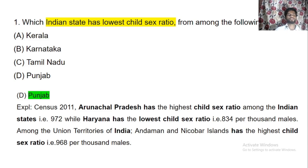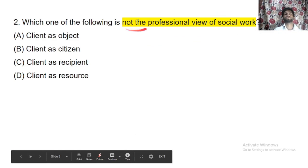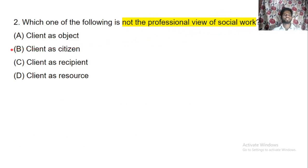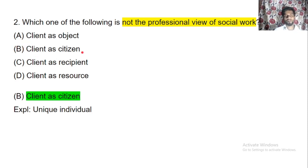Next question: which of the following is not a professional view of social work? 'Client as object' is not a professional view. We consider the client as a recipient who came to receive a benefit or solution, and as a resource. However, we cannot view the client merely as a citizen because we believe every individual is unique with unique problems.